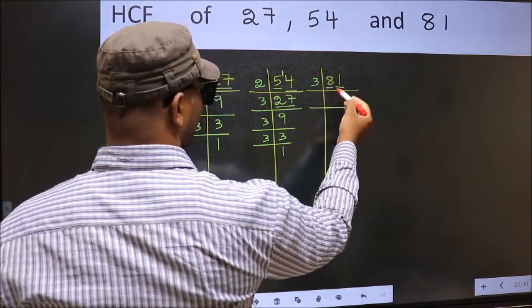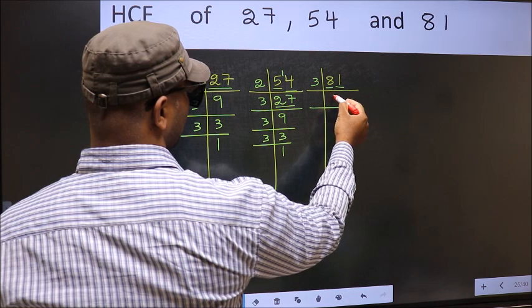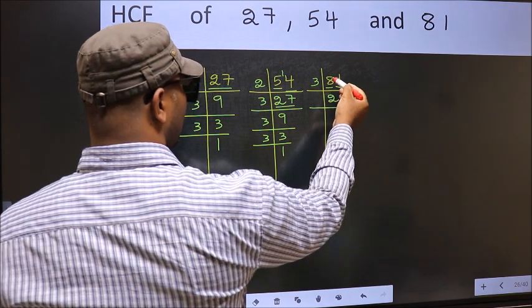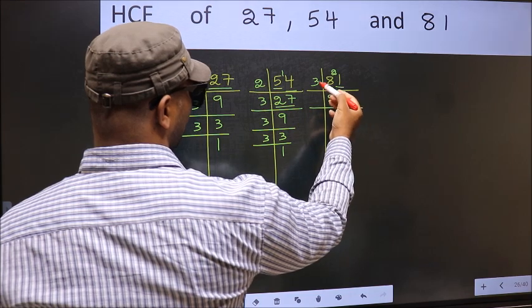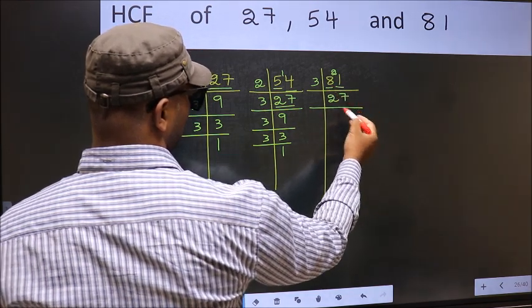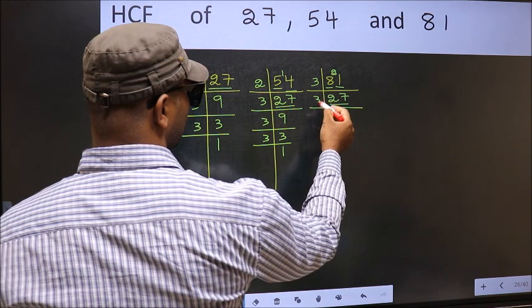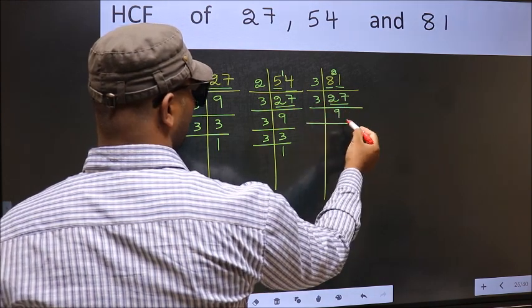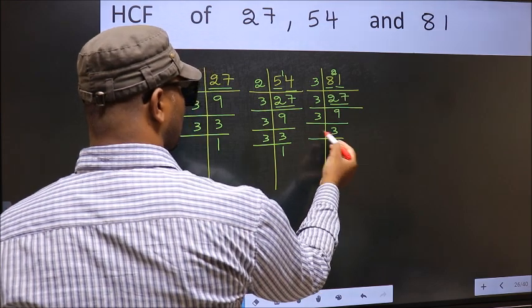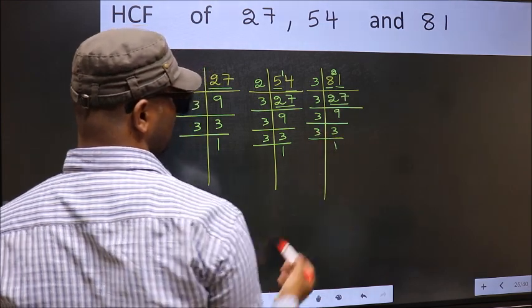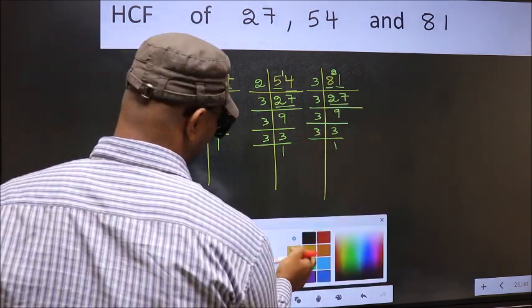First number 8. A number close to 8 in 3 table is 3 to 6. 8 minus 6 is 2 2 carried forward 21. When do we get 21 in 3 table? 3 7 is 21. Now 27 is 3 nines 27. 9 is 3 3 is 9. Now 3 is a prime number so 3 1 is 3.